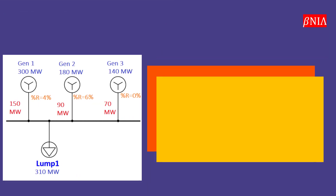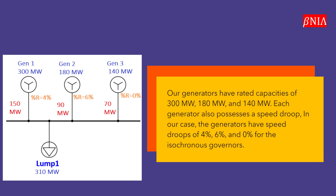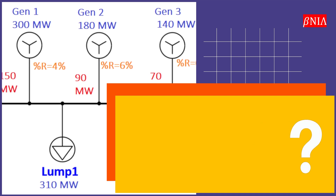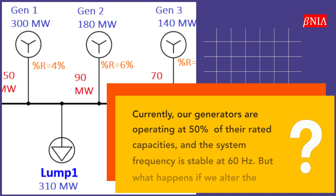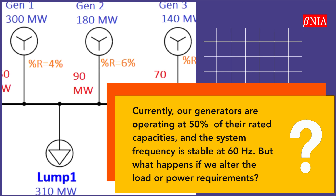Our generators have rated capacities of 300 MW, 180 MW, and 140 MW. Each generator also possesses a speed droop — in our case, the generators have speed droop settings of 4%, 6%, and 0% for the isochronous governor. Currently, our generators are operating at 50% of their rated capacities, and the system frequency is stable at 60 Hz.